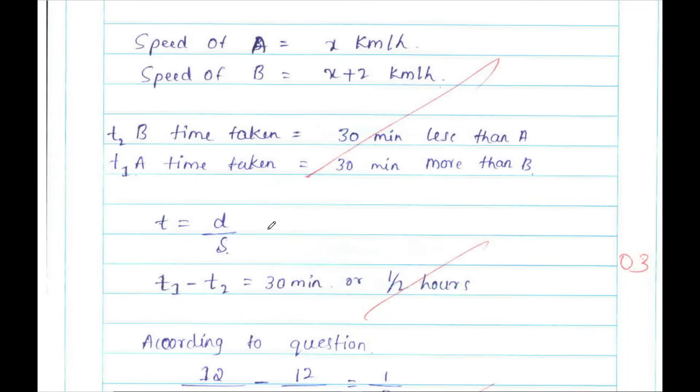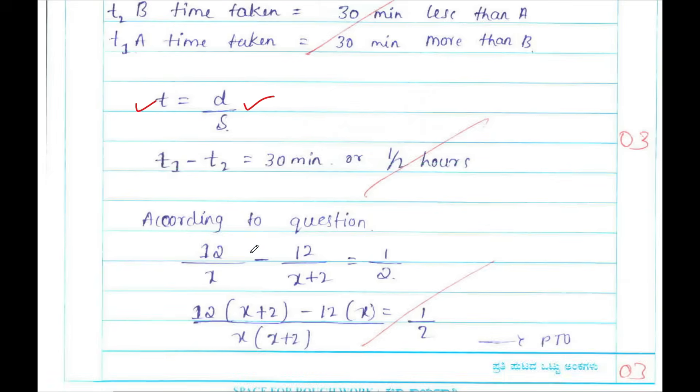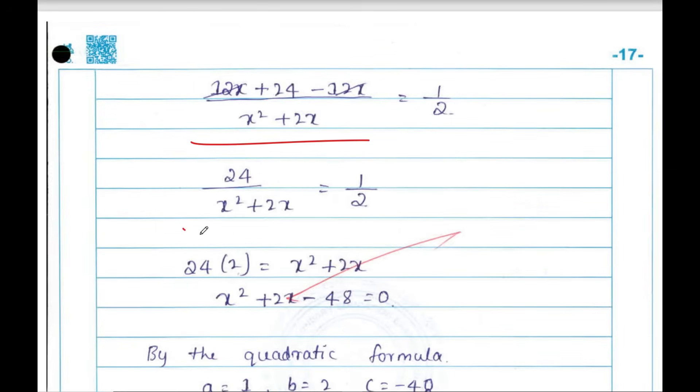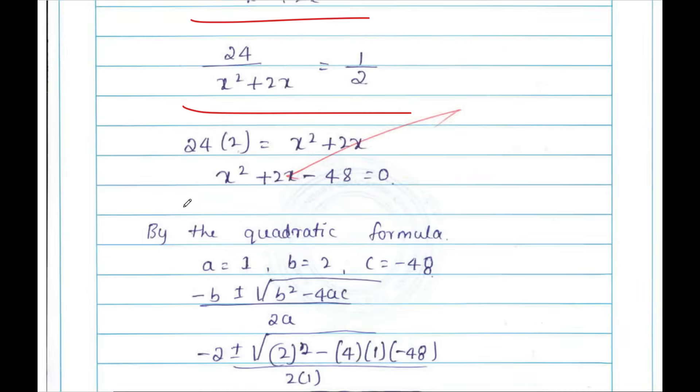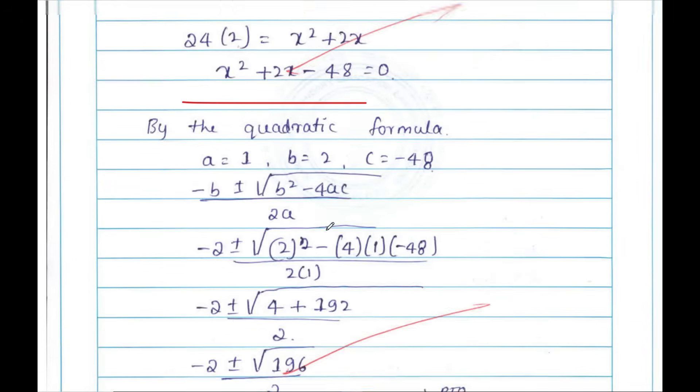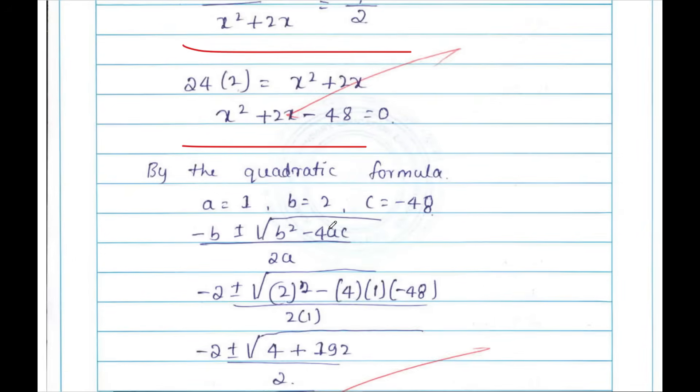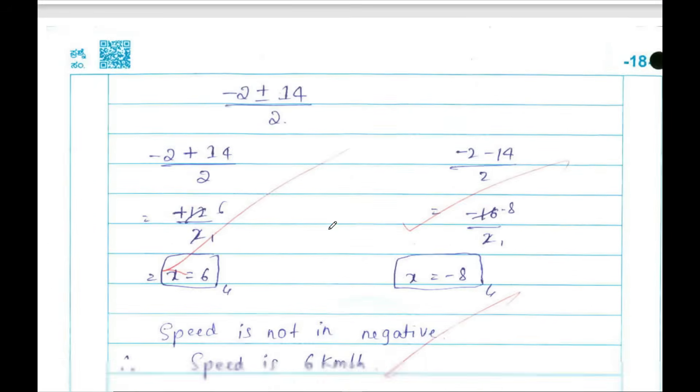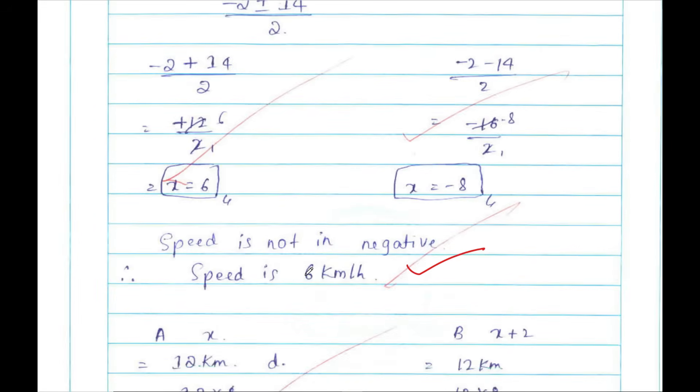So here the formula, the speed distance formula, has been written. See the spacing after each step - space has been provided. And the statement is written.